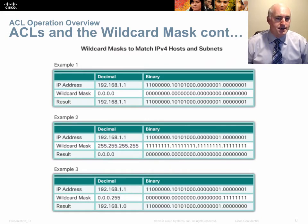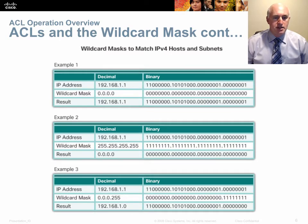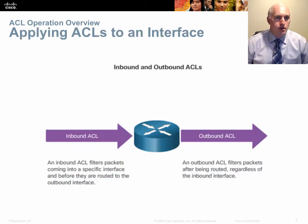In example two, comparing 192.168.1.1 with a mask of 255.255.255.255 means you don't care what bits match, so everything matches — that statement would match every single IPv4 address. In example three, using the same address but matching only the network bits means it would match any IP address in the 192.168.1.0 network.